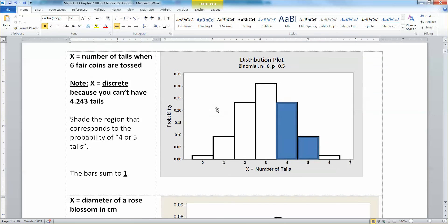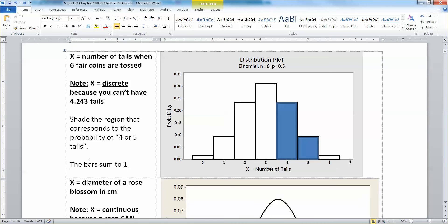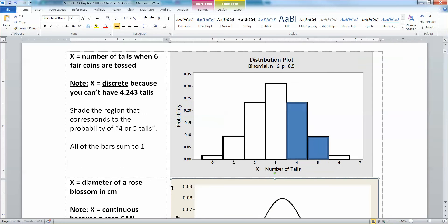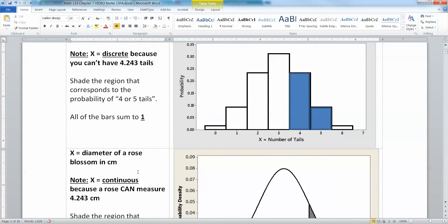And speaking of four or five tails showing, I've shaded that region just like it says to. It asks us to shade the region of four or five tails, which are these two bars right here. And those bars for the whole thing, the entire thing must add up to one. They have to. Not just the two, but all of the bars. So all of the bars must sum to one.